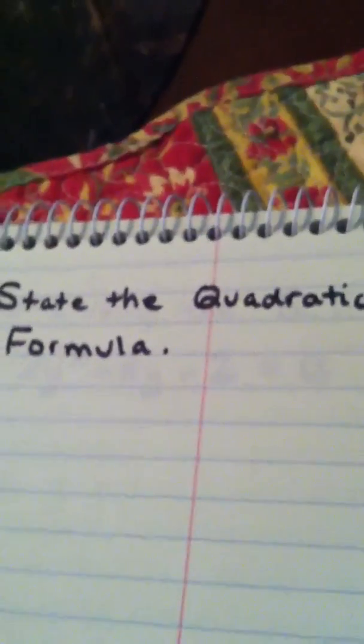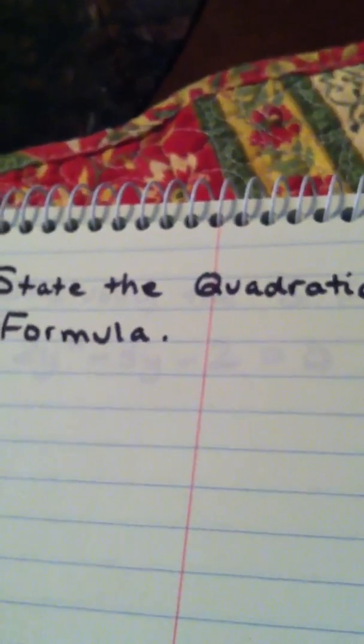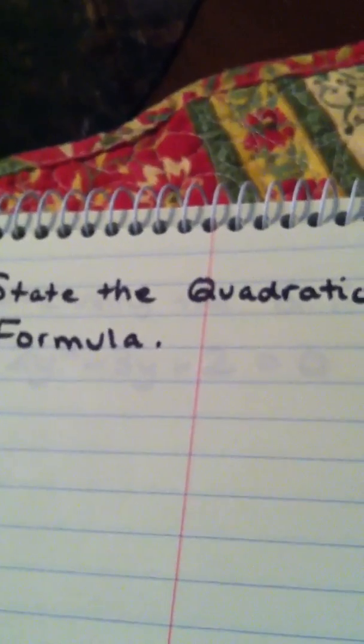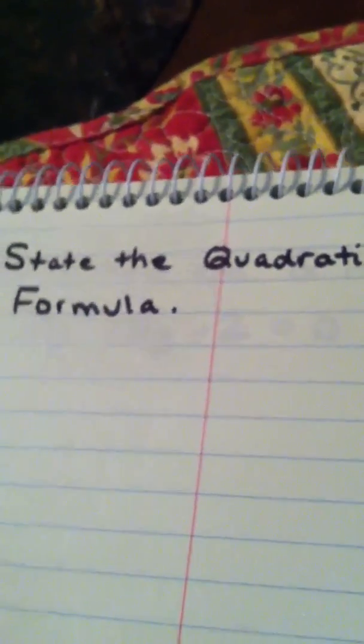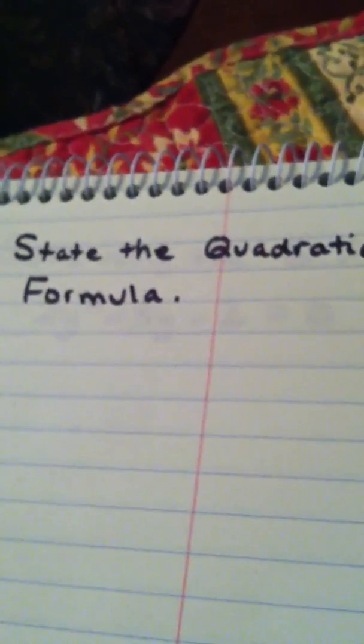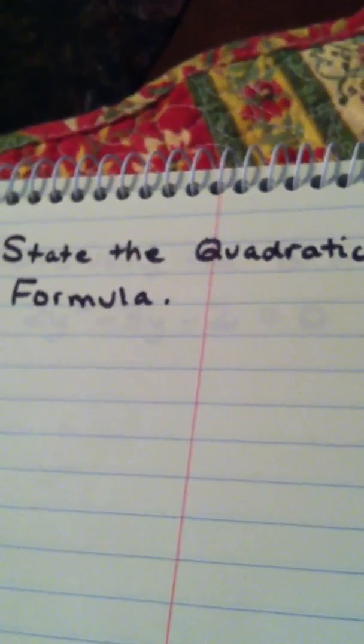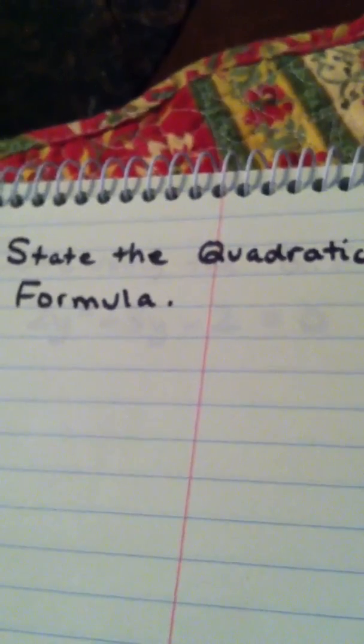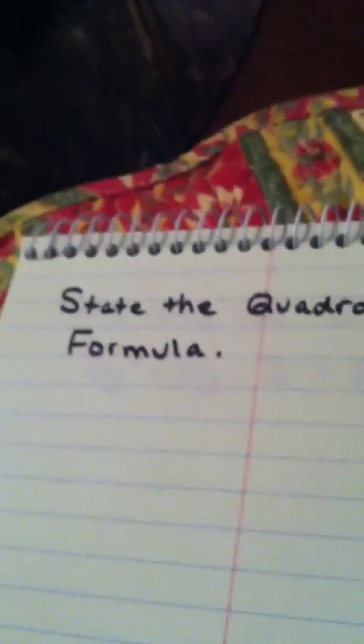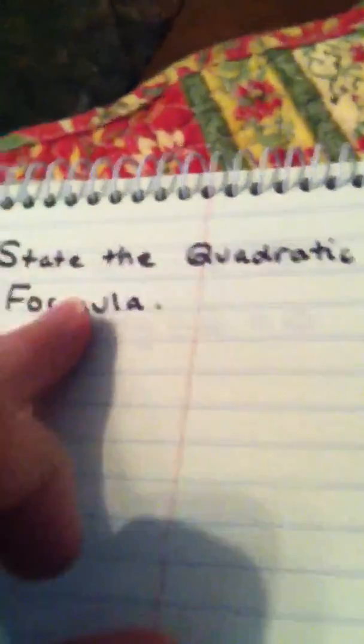Personally, I like to try factoring first, or if the square root property is calling my name. And actually in a lot of cases, completing the square is very quick. If the leading coefficient is already a 1 and the middle coefficient is divisible by 2, that's probably even faster than this.